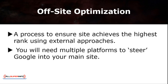Let's move on to the second agent, which is the off-site optimization. Off-site optimization is a process of ensuring your site achieves the highest rank using external approaches. Simply put, it's not optimized within your site — you'll need other sites and multiple platforms to steer Google into your main site.